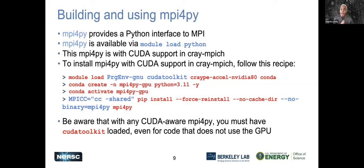One caveat to be aware of: with CUDA and MPI4Py, you must have the CUDA toolkit loaded — even if the code does not make use of GPUs. That's an NVIDIA constraint we can't overcome. A lot of the intricacies in using these packages are based on limitations from our vendor, NVIDIA, and some of their custom kernels we are not able to override.